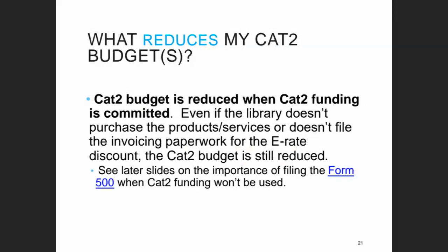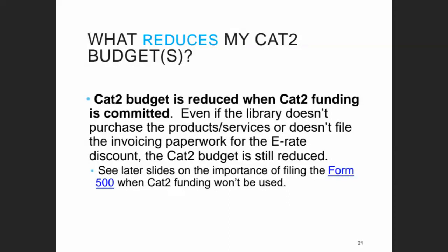Your Category 2 budget during the period goes down based on your funding commitments. If you apply for and are approved for discounts on Category 2 equipment, even if you don't end up buying that equipment, just the fact that you got the funding commitment reduces your available budget. But if you end up not being able to purchase something for any reason, you can return unused Category 2 funding to the program using a form called the Form 500, and that will increase your budget again.